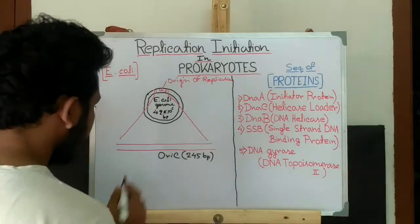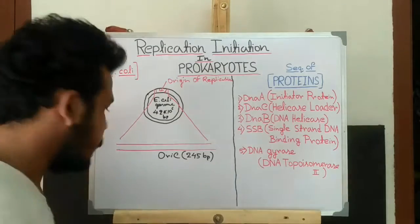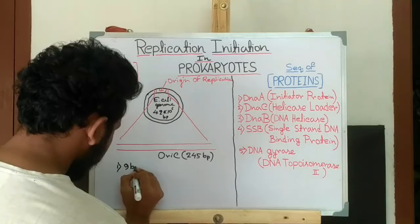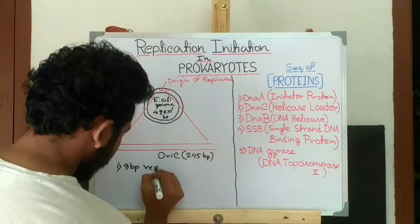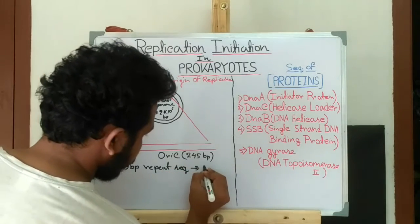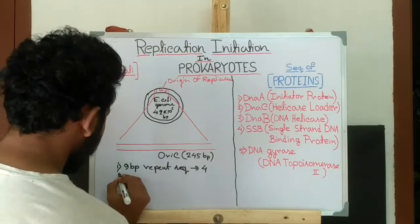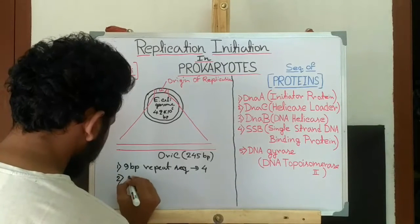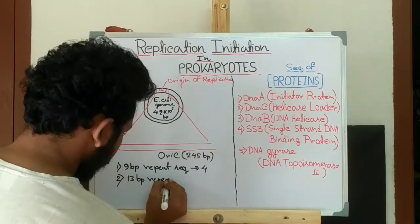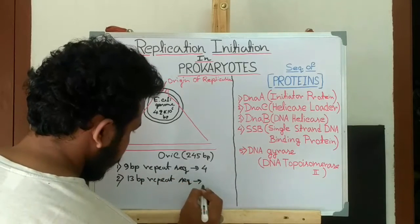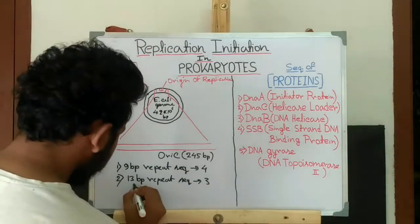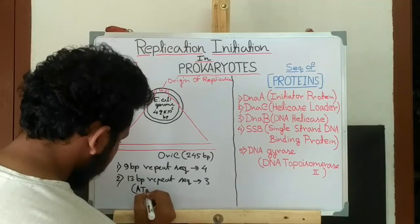Now this oriC region contains two series of repeats. One is the 9 base pair repeat sequence, it contains 4 repeats. And another is 13 base pair repeat sequence, it contains 3 repeats. And this 13 base pair repeat sequence is AT-rich.